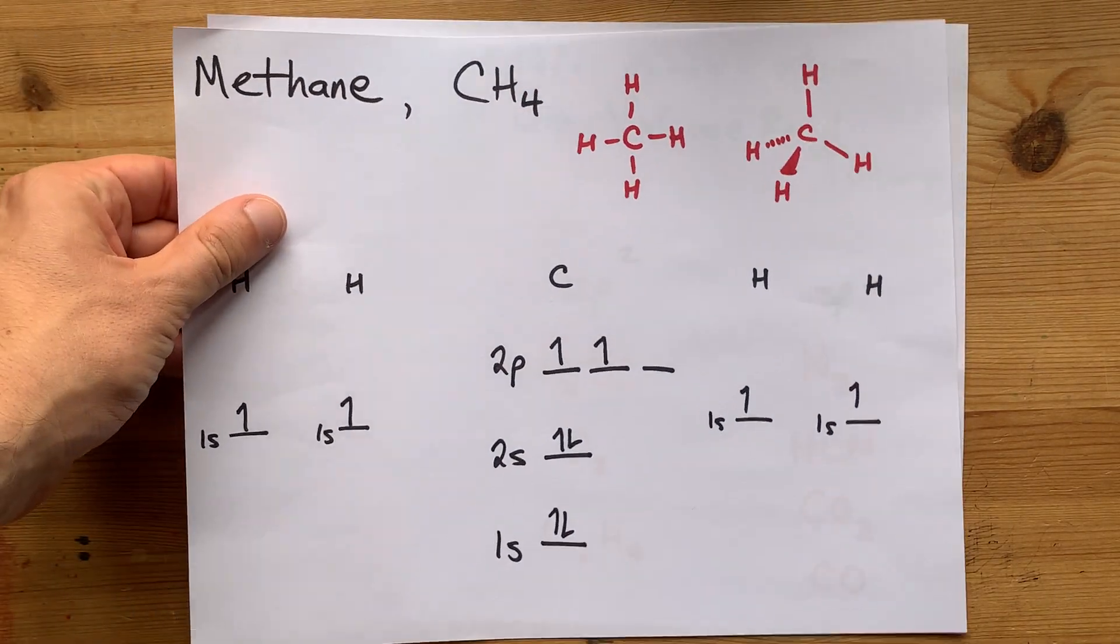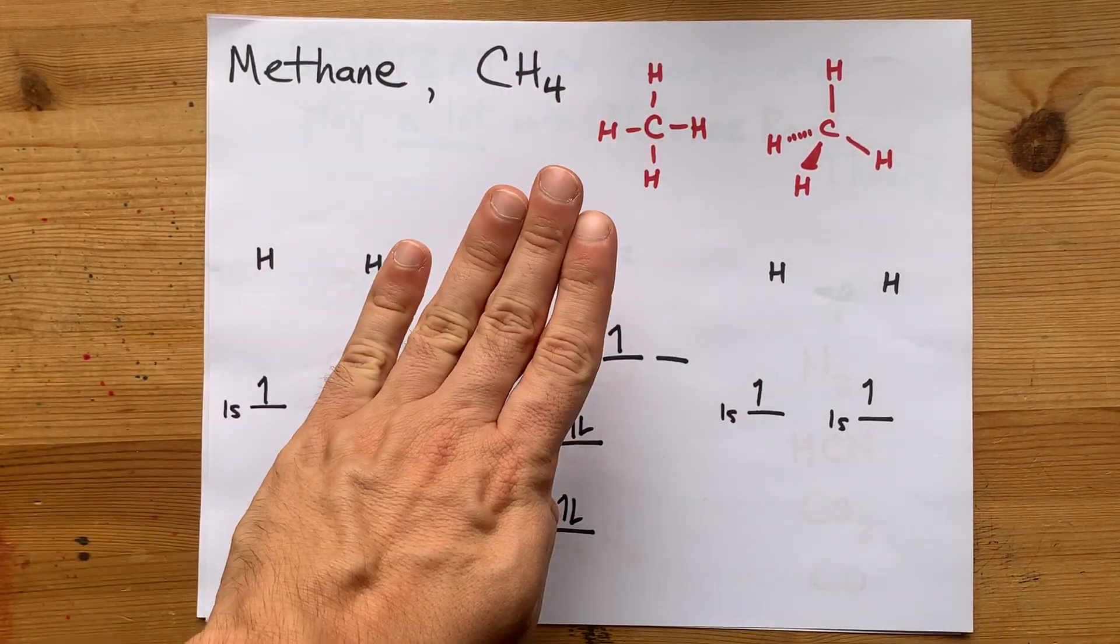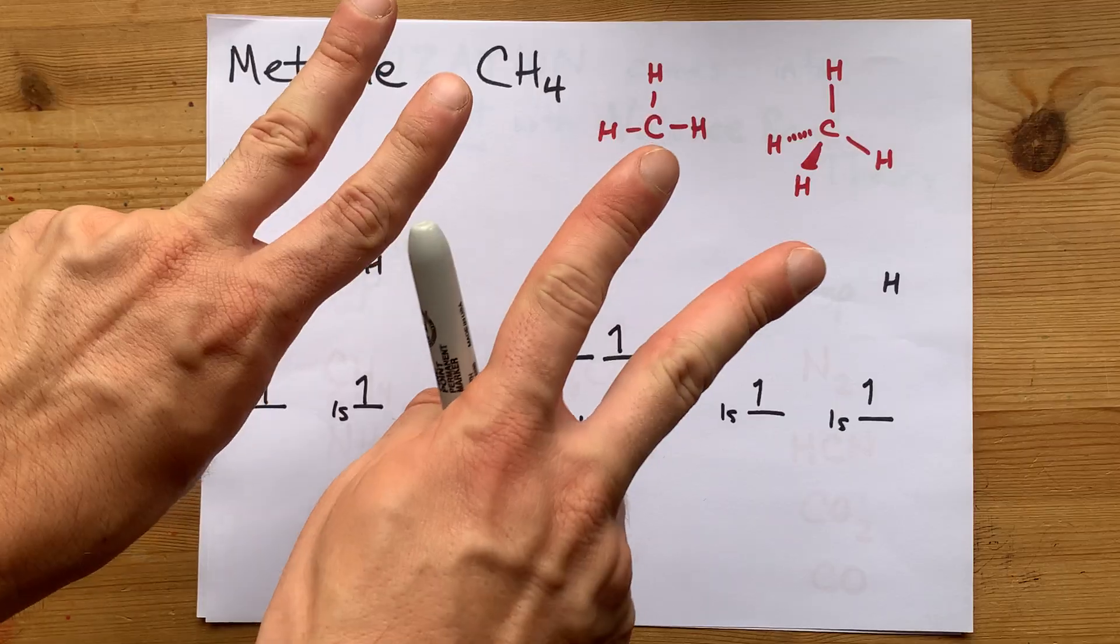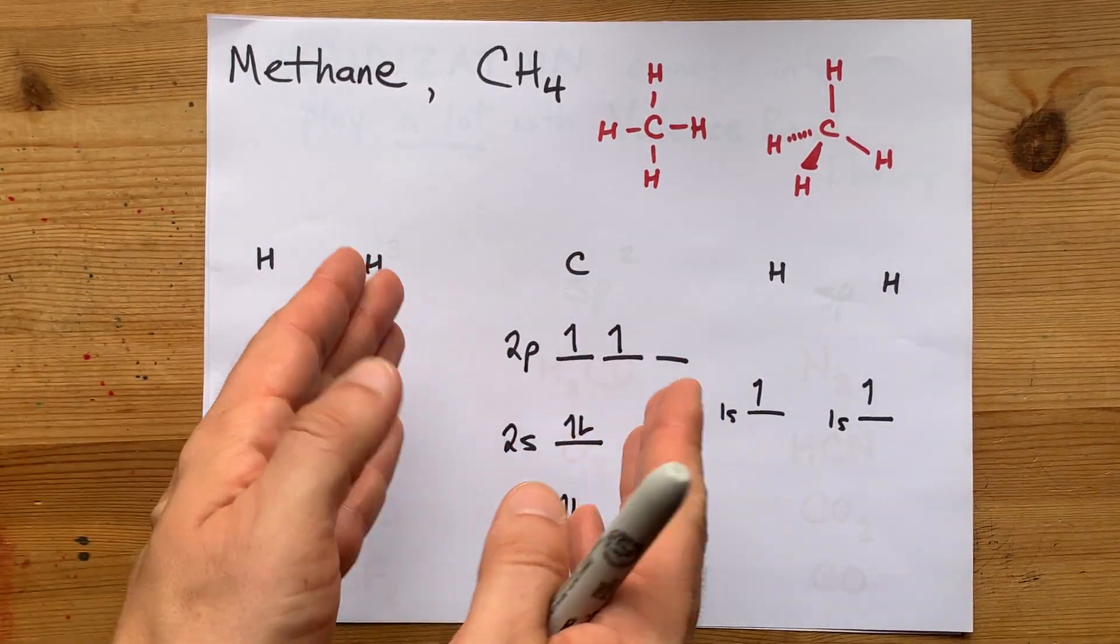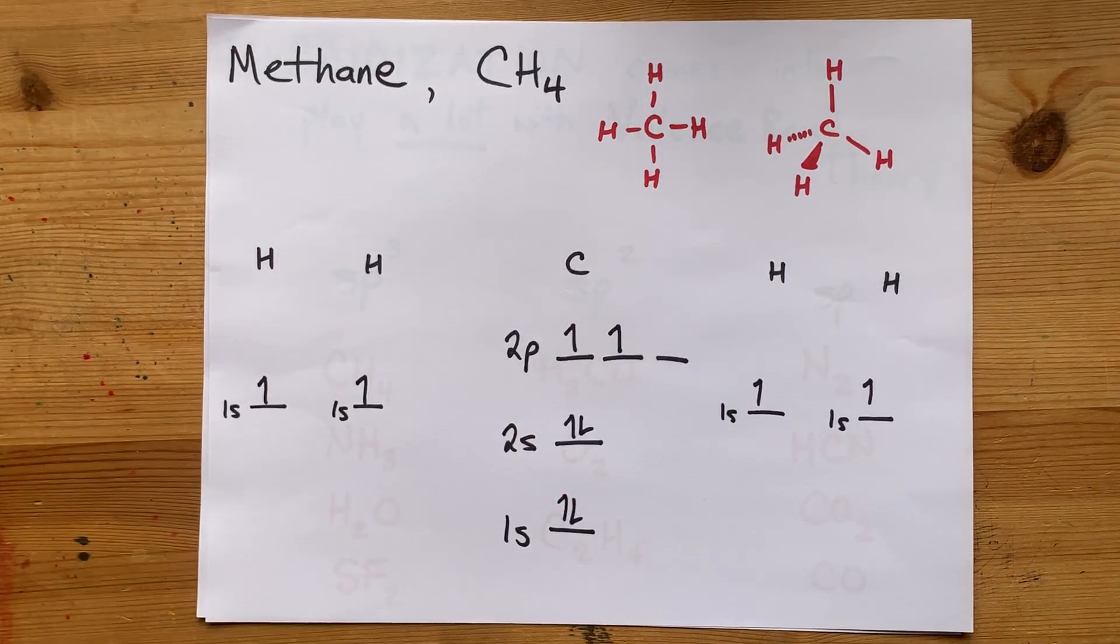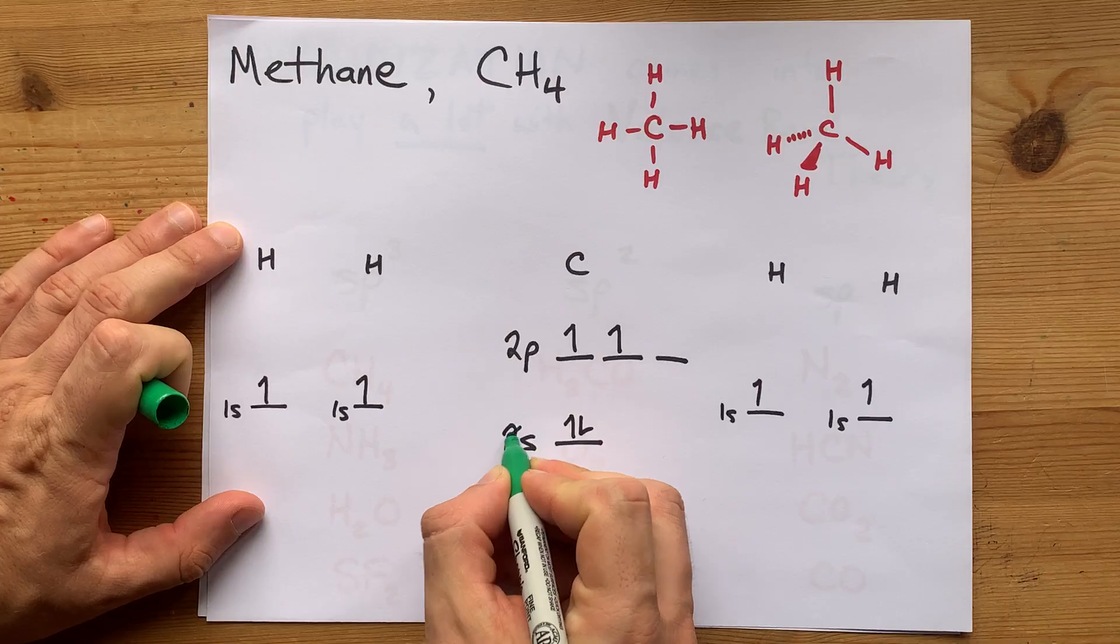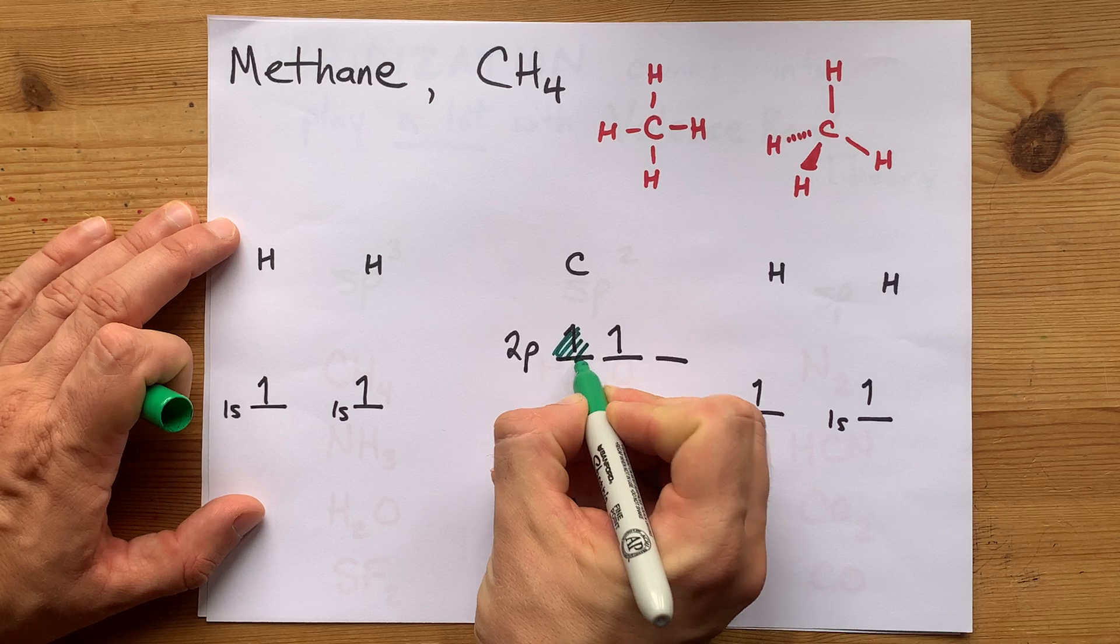But you're here for valence bond theory. So how can you get carbon to have four equal energy or degenerate atomic orbitals ready to overlap with four different hydrogens? The answer is, this 2s atomic orbital combines with three of the 2p atomic orbitals.